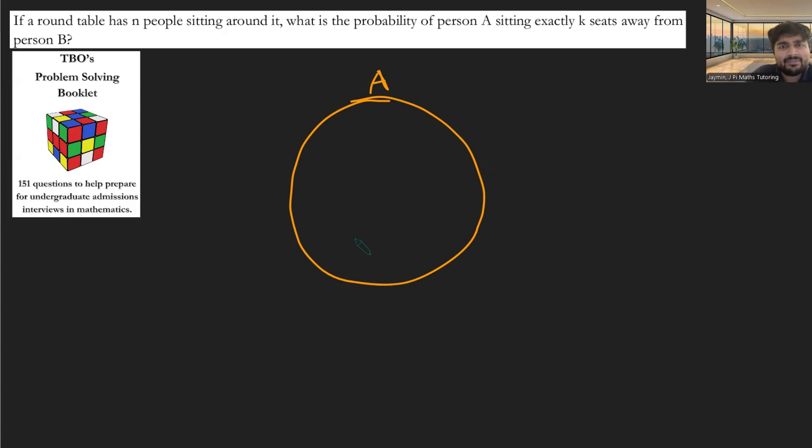So A is occupying that seat. How many seats are left? Well, it's going to be n minus one seats left over. So n minus one seats, all the way around here. And now, what's the probability that B is sitting exactly k seats away from person A? Well, if k is a small number, let's say two or something, there's only two spots that B could be sat in. Either this one or this one. In which case, the probability, which we'll call P here, is just going to be two over n minus one.